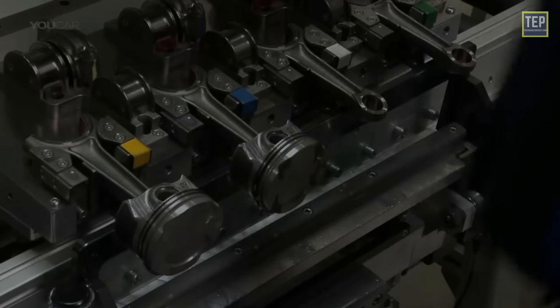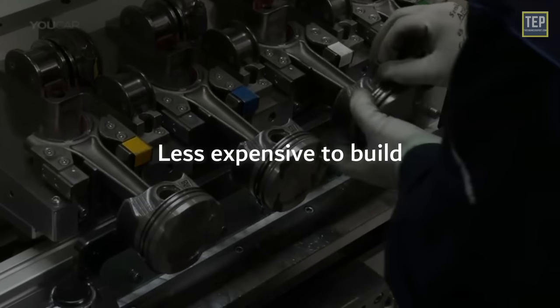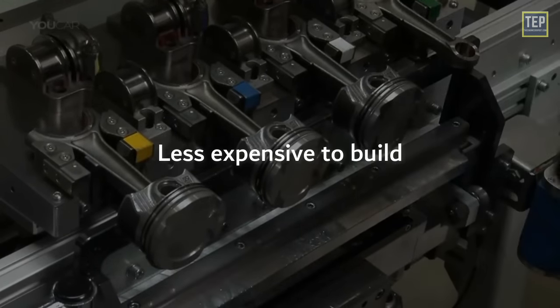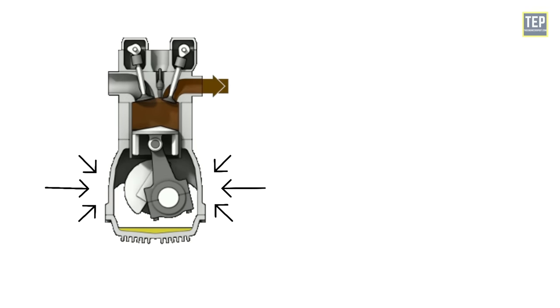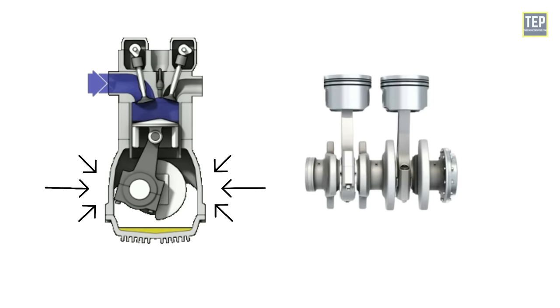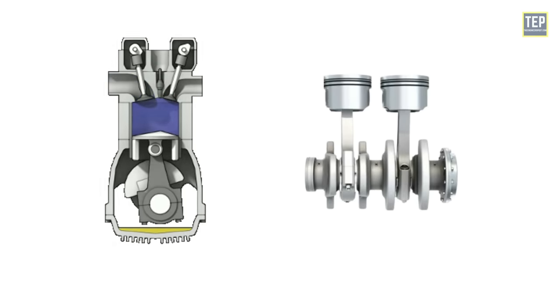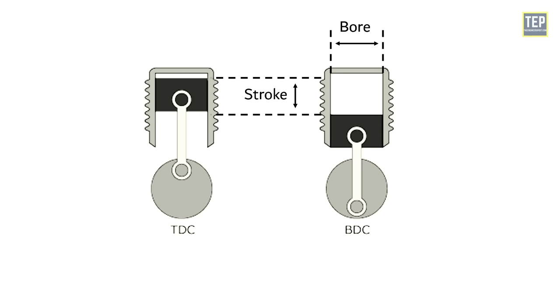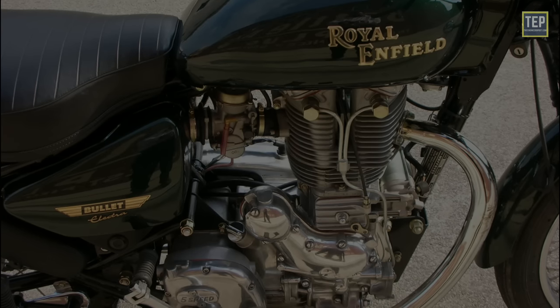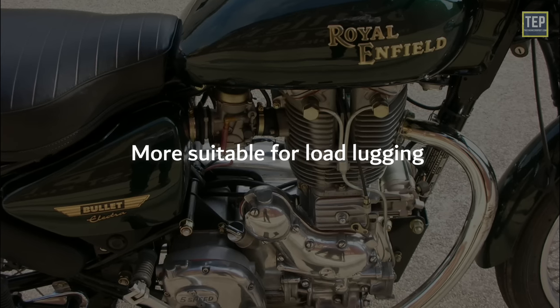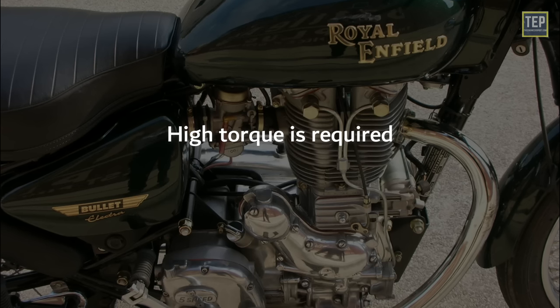Single cylinder engines are less expensive to build. Due to the greater potential for airflow around all sides of the cylinder, air cooling is often more effective for single cylinder than multi-cylinder engines, thanks to their larger bores and strokes. Single cylinder engines produce higher torque at lower revs, making them more suitable for load-lugging and applications where high torque is required lower down the rev range.